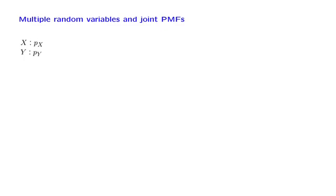By this point, we have discussed pretty much everything that is to be said about individual discrete random variables. Now let us move to the case where we're dealing with multiple discrete random variables simultaneously, and talk about their distribution. As we will see, their distribution is characterized by a so-called joint PMF.